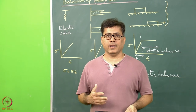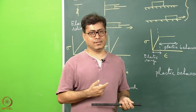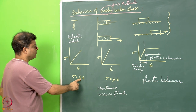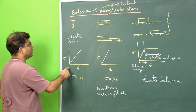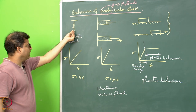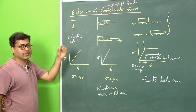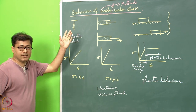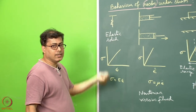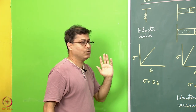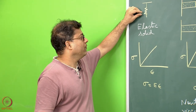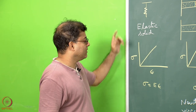Let us look at the deformation of rock and its corresponding mechanical models. We start with elastic solid behavior. For elastic solids, stress is proportional to strain and E is the Young's modulus. So in a stress versus strain curve, it will be a straight line. The mechanical analog is a spring: with a small stress or force applied by pulling, the spring deforms and extends its length. If I remove the stress, the spring goes back to its initial position — so long as the stress is not too high.